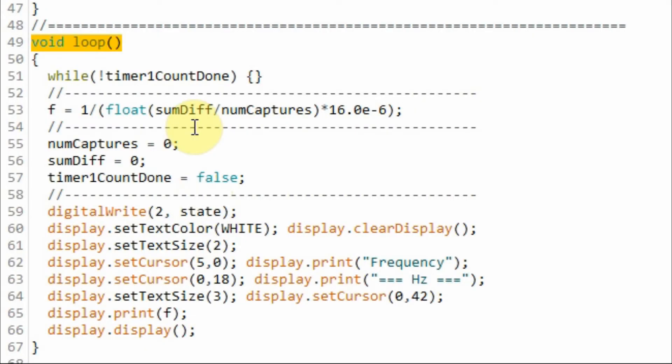The C++ program calculates the frequency based on the average of multiple captured values. Inside the loop function, this while loop will loop indefinitely until the Timer 1 counting is done, and then we calculate the frequency based on the average captured values and display the result on the OLED screen.